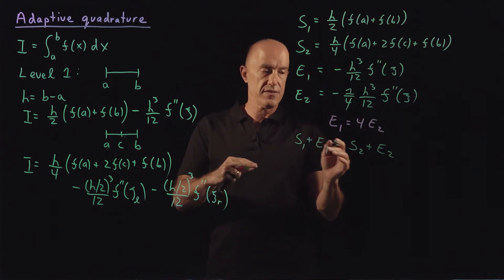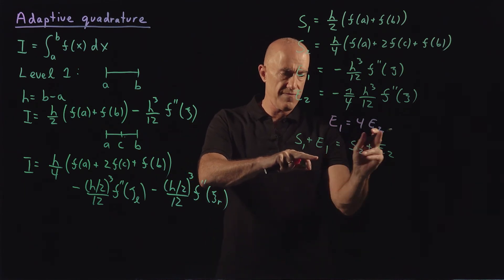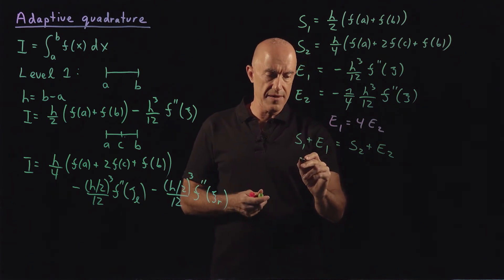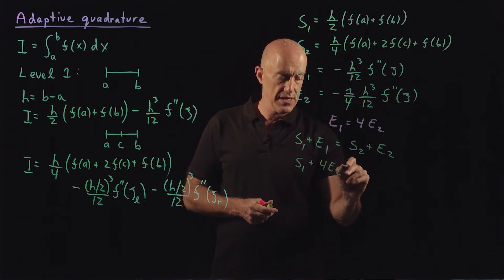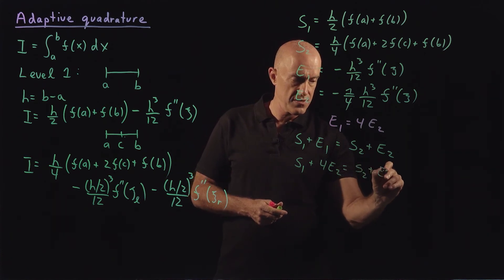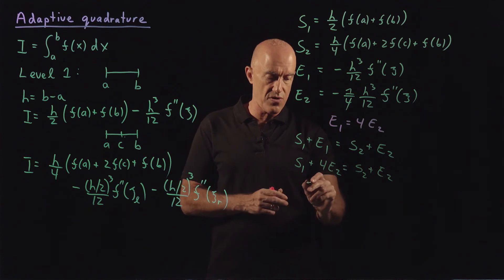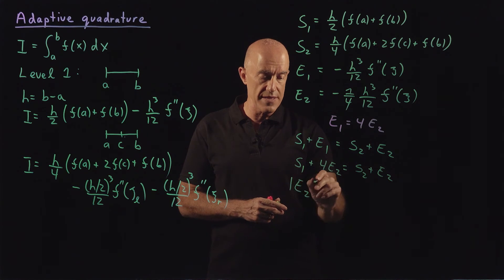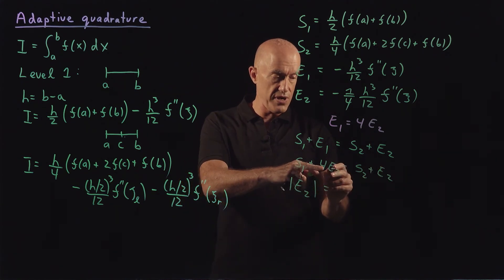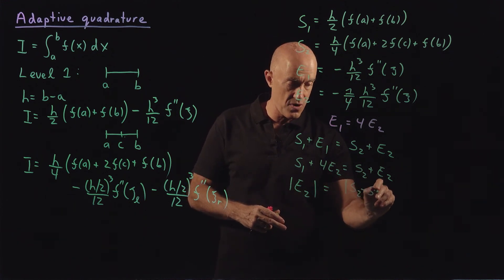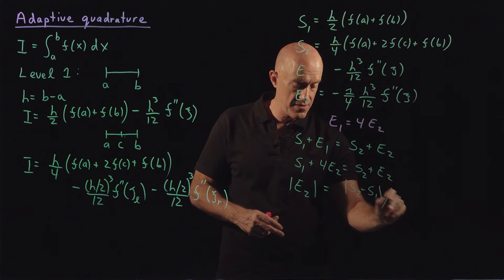So finally, we would get, if e1 is 4 times e2, we would get s1 plus 4 times e2 equals s2 plus e2. So we get an estimate for the error. We say that the error then, or if we want the absolute value of the error, 3e2 equals s2 minus s1, s2 minus s1 divided by 3.